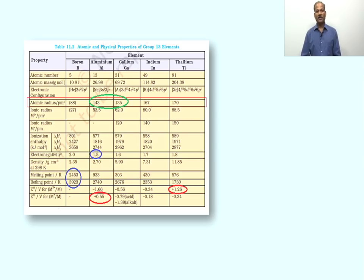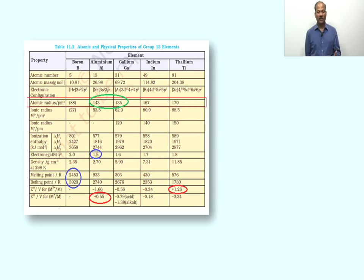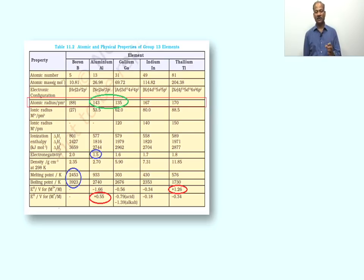Aluminium and Gallium have a difference in their inner core electronic configuration. There is a poor shielding effect in Gallium, so the atomic size will shrink. One important trend is noticed: the size of Gallium is smaller than that of Aluminium.